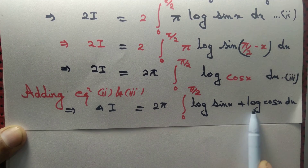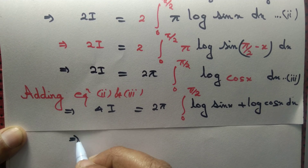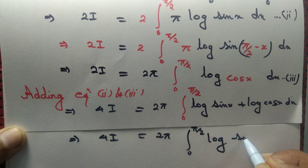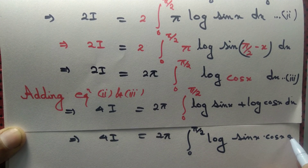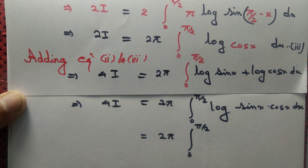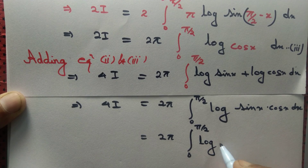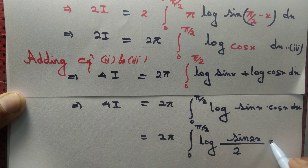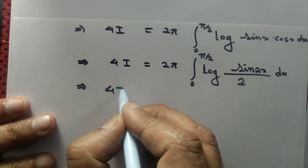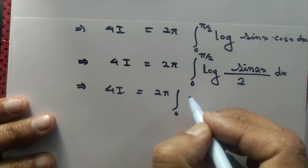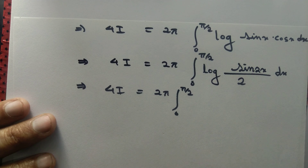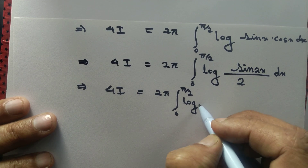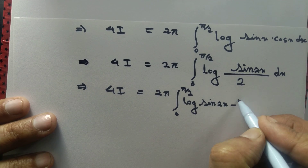Now we know that log u + log v = log(uv). So log(sin x) + log(cos x) = log(sin x · cos x). Now sin x · cos x can be written as sin(2x)/2. So log(sin x · cos x) = log(sin(2x)/2) = log(sin(2x)) minus log 2.